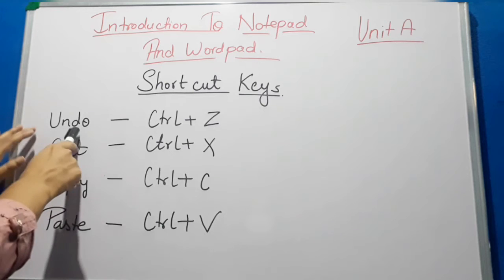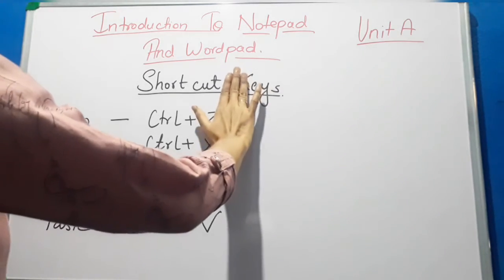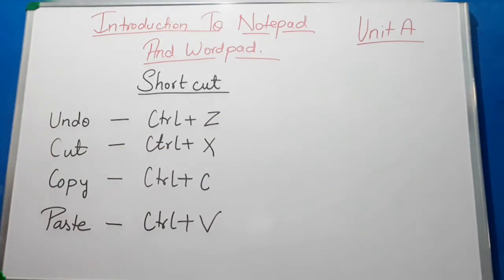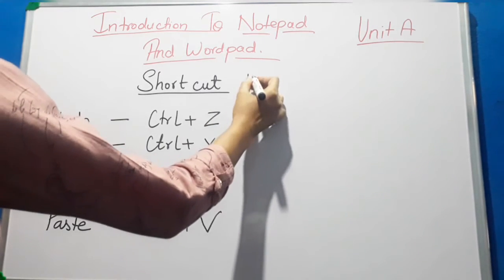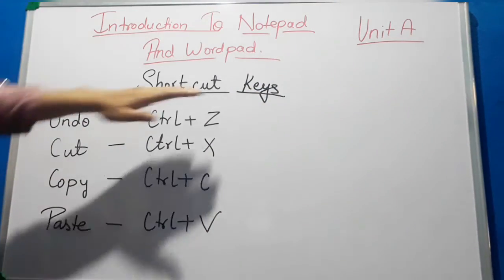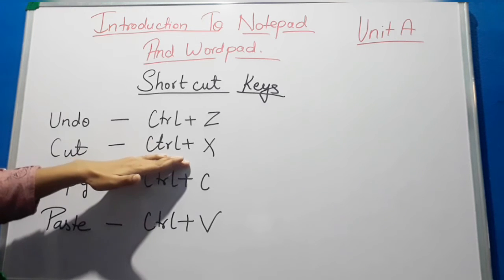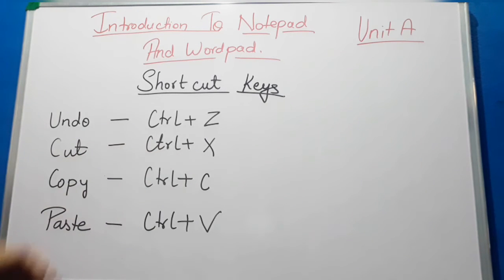Undo is used to reverse an action. For example, if you have deleted some text, when you press Ctrl+Z the deleted text will reappear as it was earlier. Cut — the shortcut key is Ctrl+X — is used to cut a part of the file or document that you want to cut.